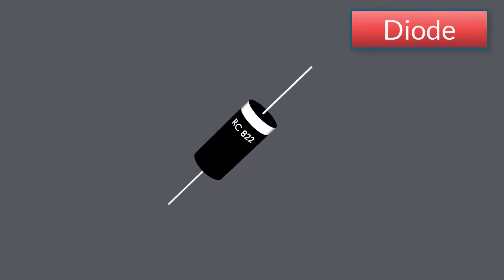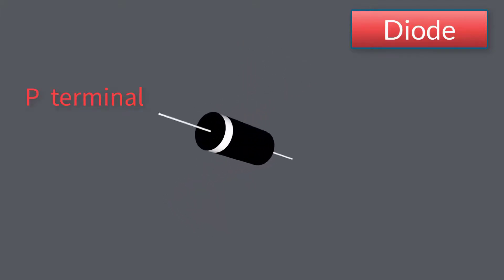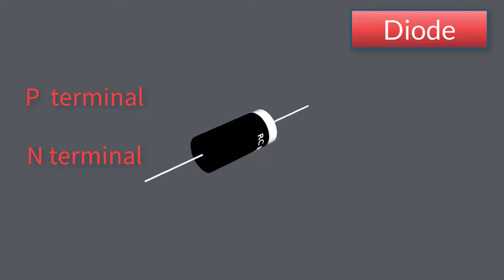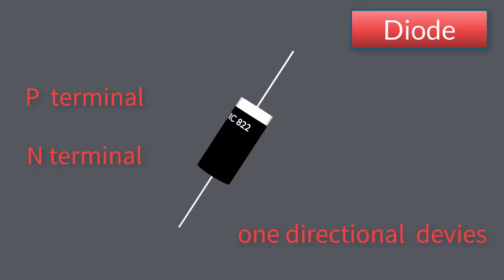A diode is a two terminal device. One is P-terminal, another one is N-terminal. It allows electric current in one direction and blocks electric current in another direction.